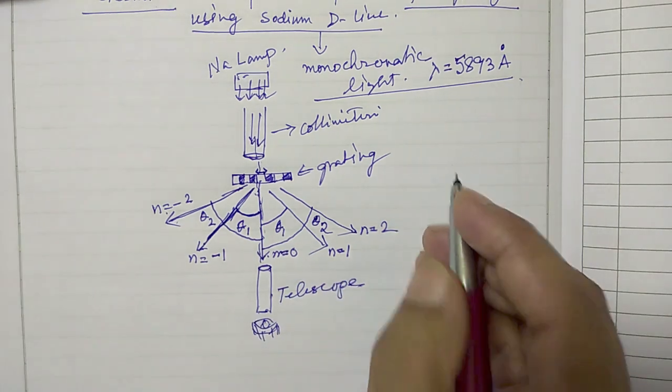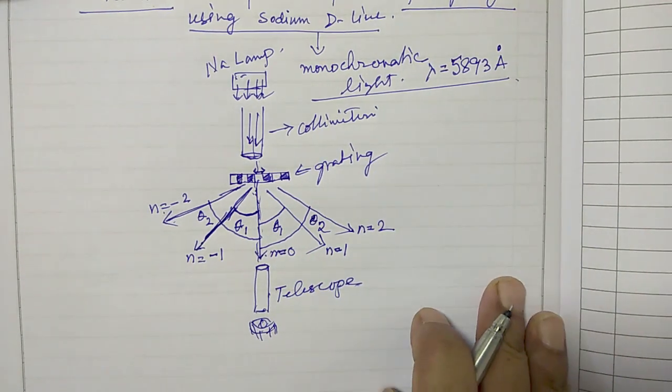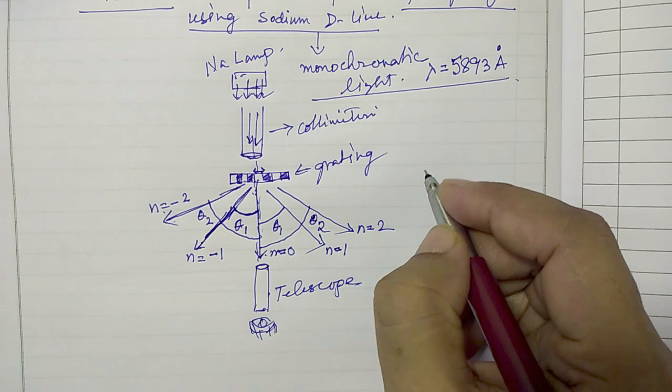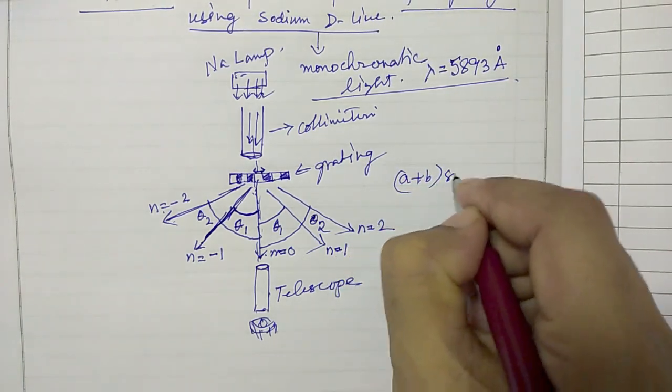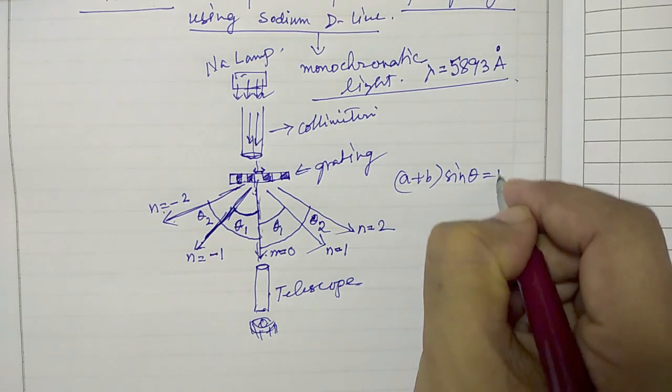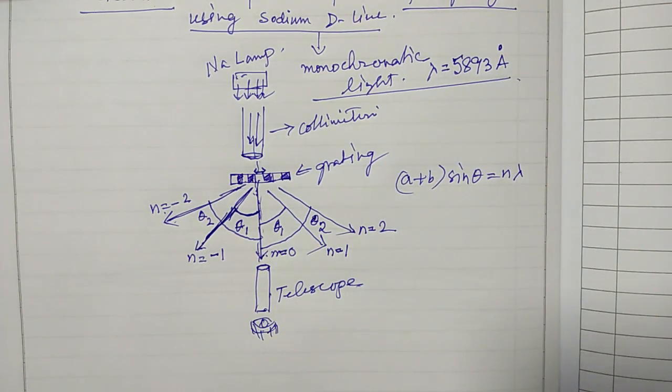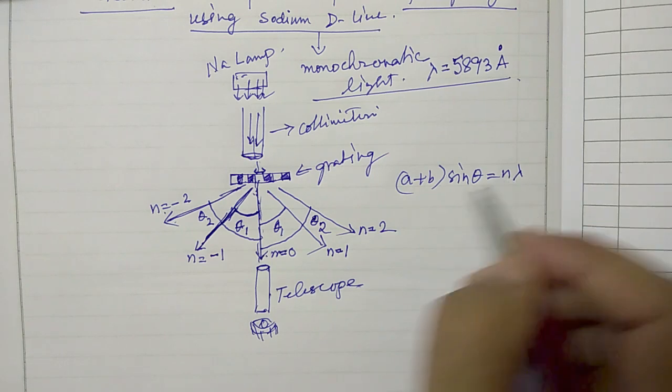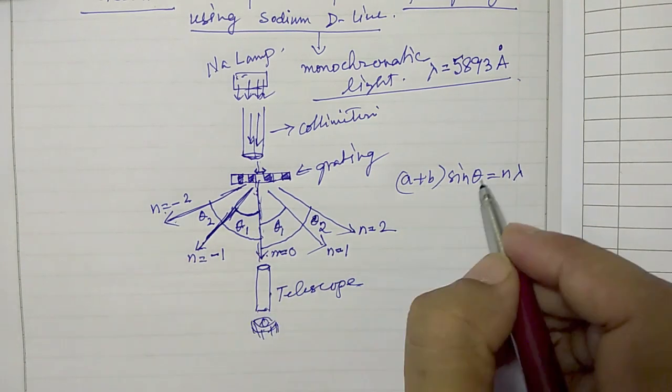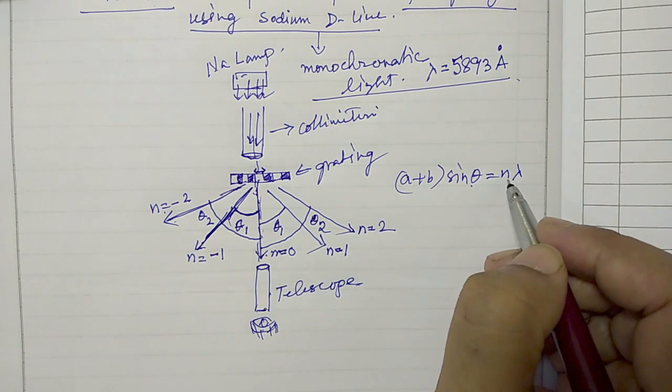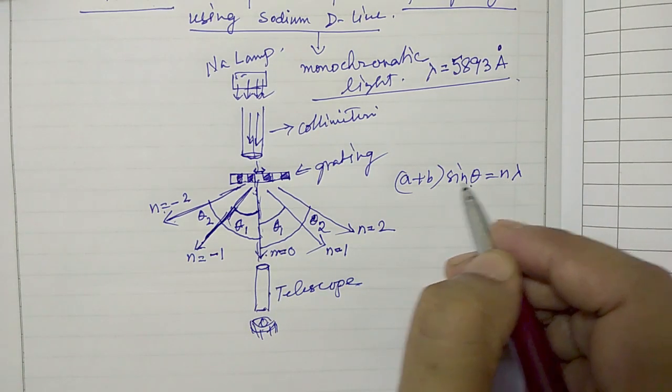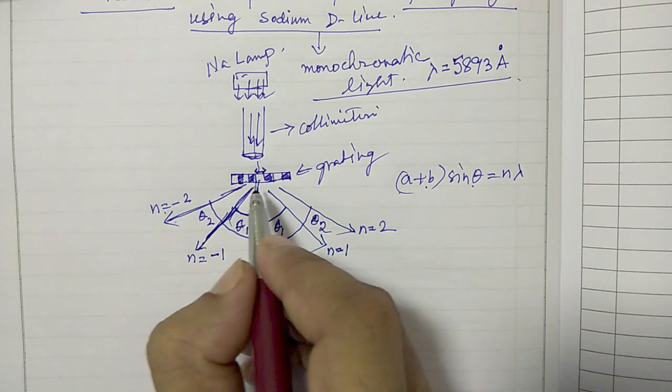That equation or this relationship is called grating equation and that equation is (a+b) sin theta equals n lambda. Where lambda is the wavelength, n is the order, these are this n, theta is these angles, for a given n you will have one particular theta.